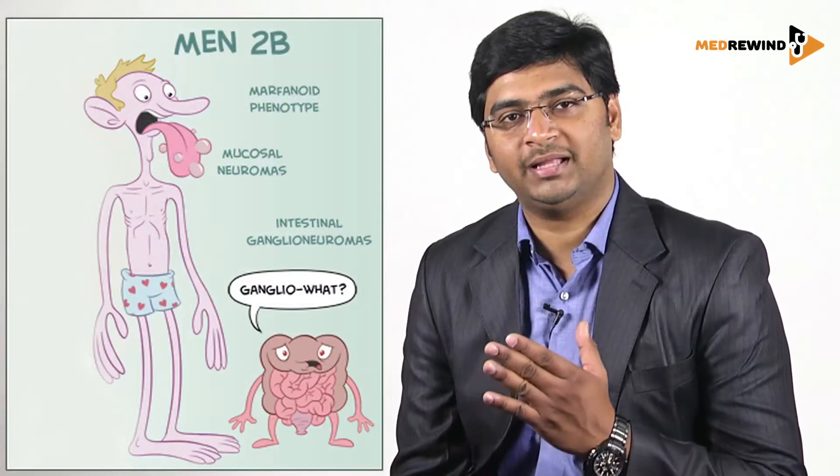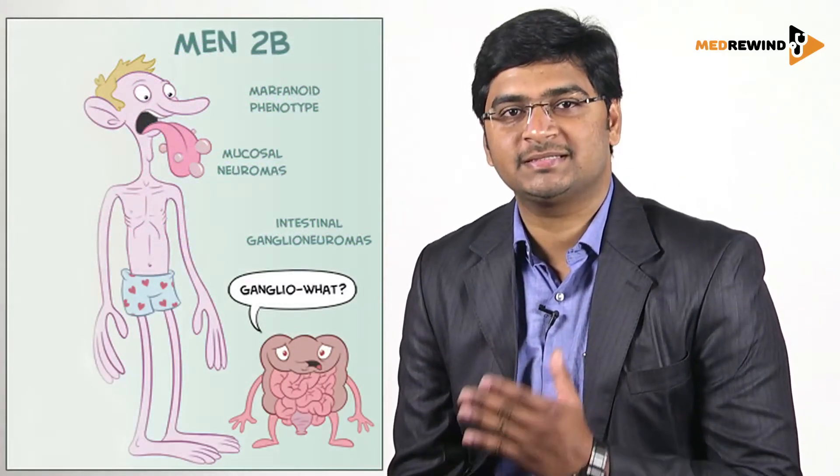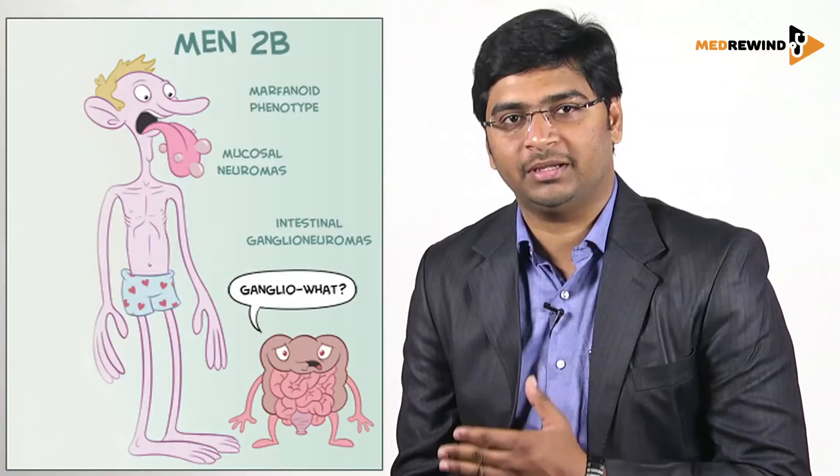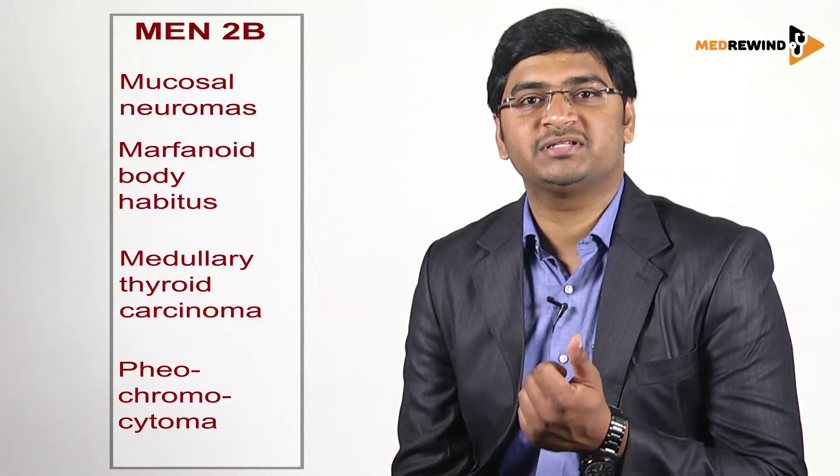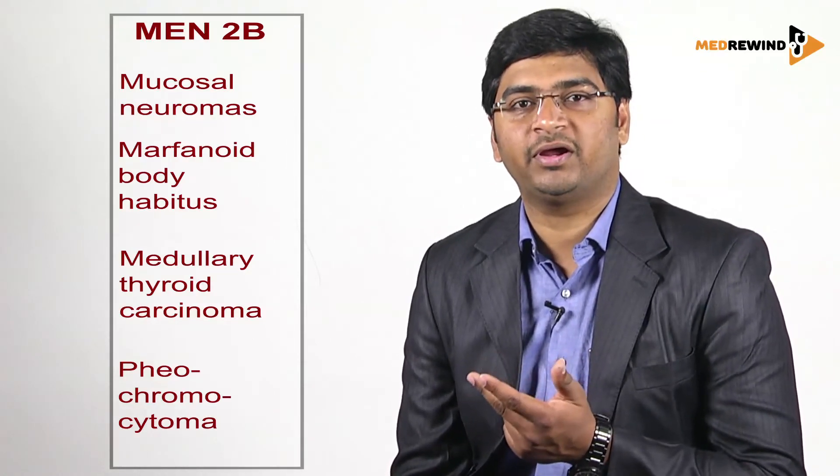Coming to MEN 2b, you have all M's — M, M, M: one is medullary carcinoma of thyroid, one is mucocutaneous ganglioneuromas, and the third is marfanoid habitus. This is a simplified way of remembering things, and hopefully you don't get confused.